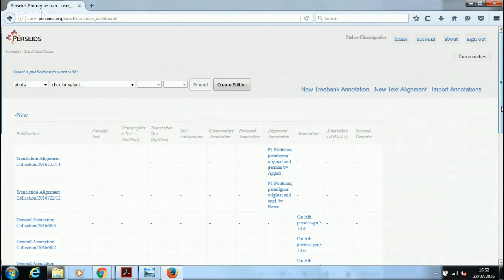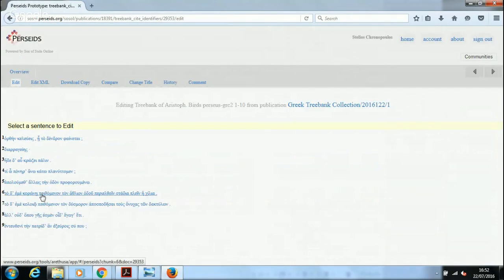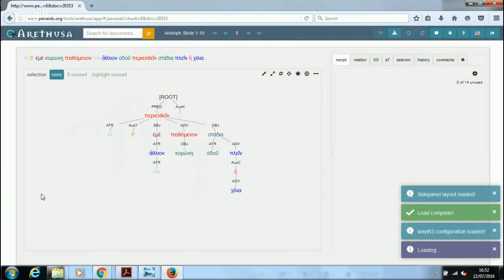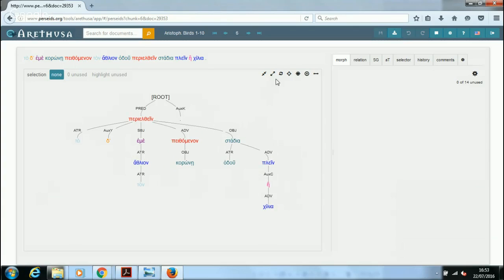Now, the basic principle of dependency grammar, I can demonstrate that using the example again from the first verses of the Birds. There are three very important principles for dependency grammar. First of all, we have a hierarchical structure for representing relationships between words. That means the linear nature of the text is broken down into such hierarchical structures that we also represent visually.